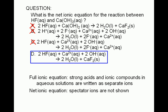Another question is: how would we know that the products are water and calcium fluoride? You should recognize that HF is an acid and calcium hydroxide is a base. For an acid-base reaction, the products are water and a salt. Our salt here is calcium fluoride. The water comes from the combination of hydrogen ions from the acid and hydroxide ions from the base, and the salt comes from the two remaining ions.